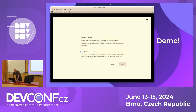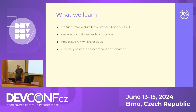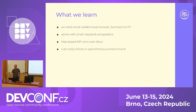Time is running out, so let's quickly go through the rest. Issues include the slow software stack, no clear requirements — no one has definitively said what we need and don't need — and not enough feedback yet. We still don't have Agama in OpenSUSE. We tried other browsers and Wayland compositors, and nothing worked well for us. Other parts we can discuss at the OpenSUSE booth.